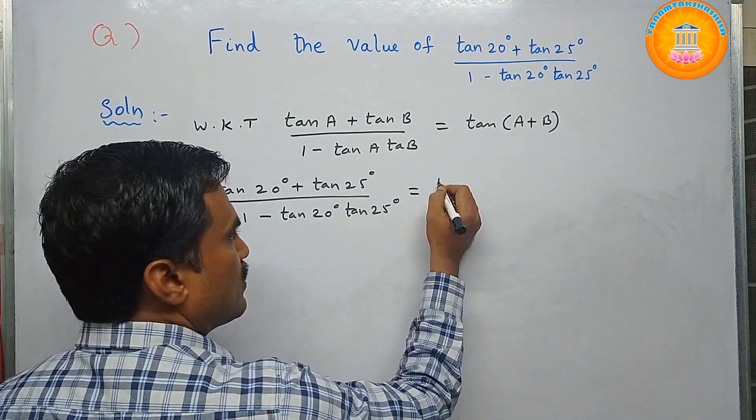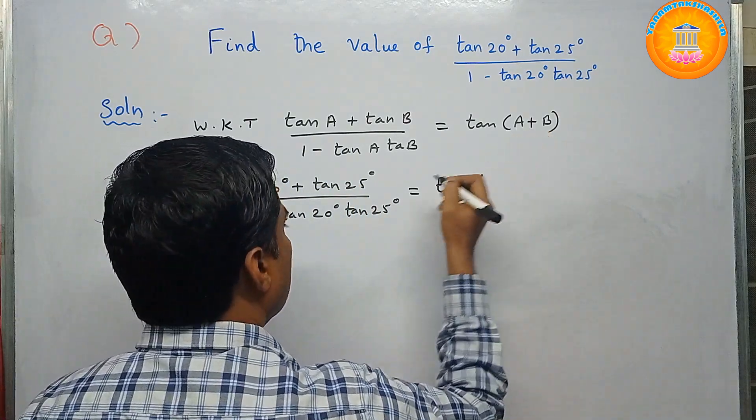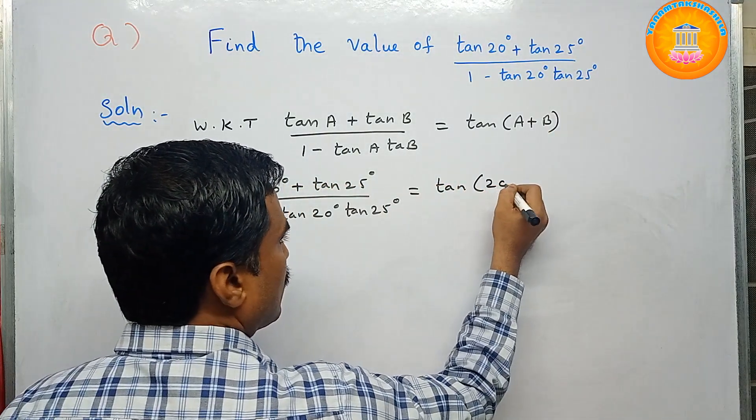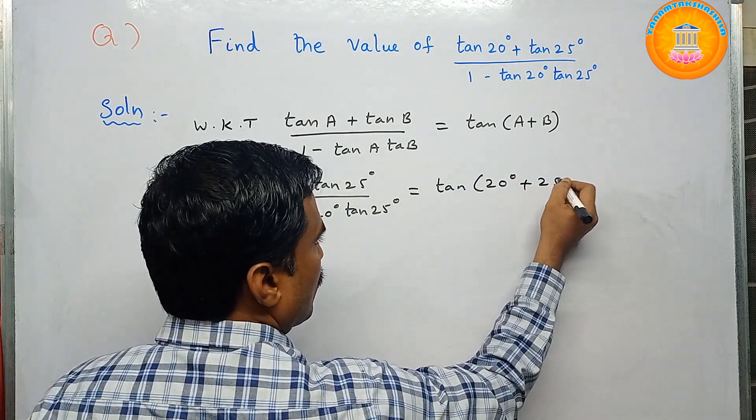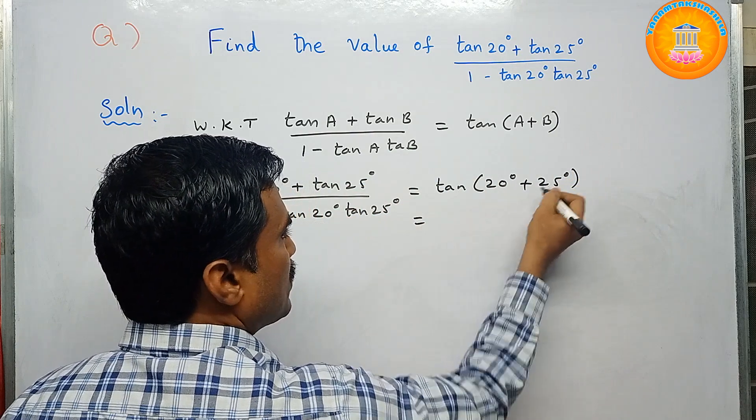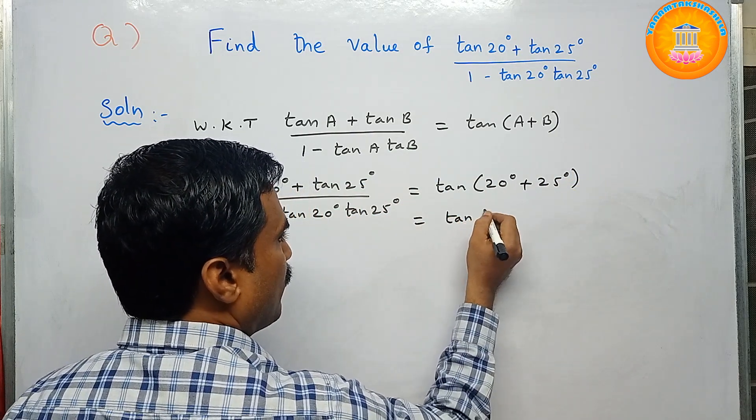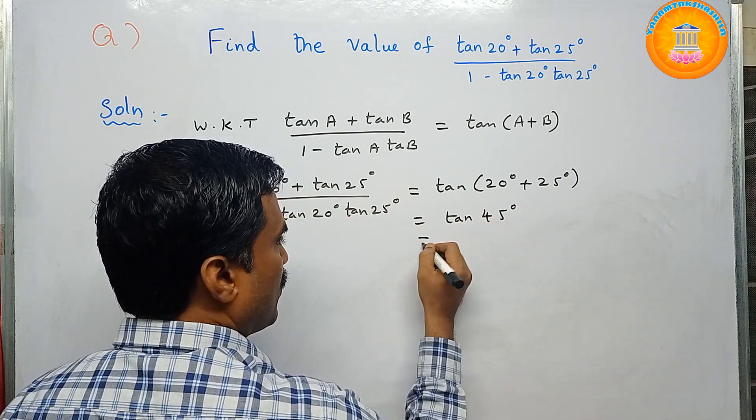So this is equal to tan of 20° plus 25°, which is tan 45°. Now what is tan 45° value? That is 1. So 1 is the solution for the above problem.